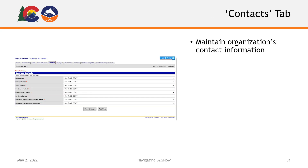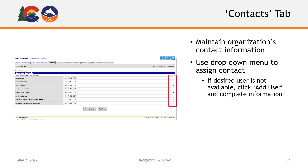Your Contacts tab is where you can maintain your organization's contact people. To select a contact person, use the drop-down menu to find the appropriate user. If the user you wish to add as a contact person isn't listed in the drop-down menu, click the Add User button at the bottom of the page and complete the requested information.